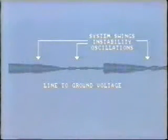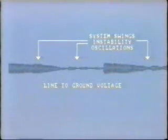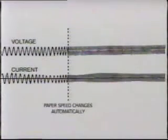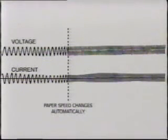We have been looking at oscillograms associated with faults on the system. Generally, the whole story can be shown within a few cycles — usually less than one second. System swings, such as those associated with instability, can also be recorded, but such swings may last for several hundreds of cycles and consequently give us a lot of paper to examine. Some oscillographs have the ability to change paper speed automatically when recording these longer-term swings.